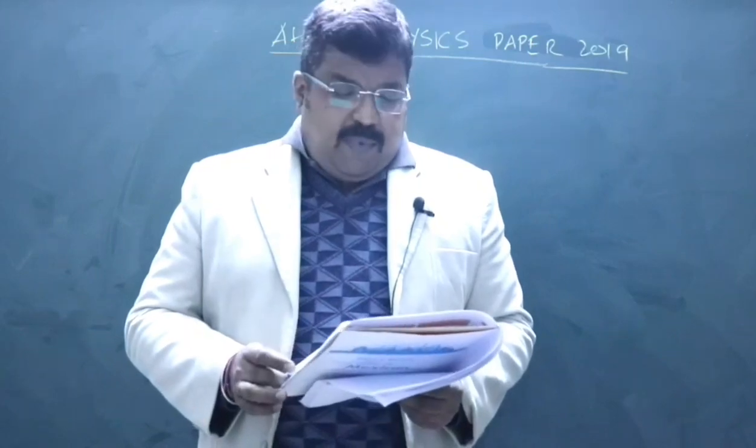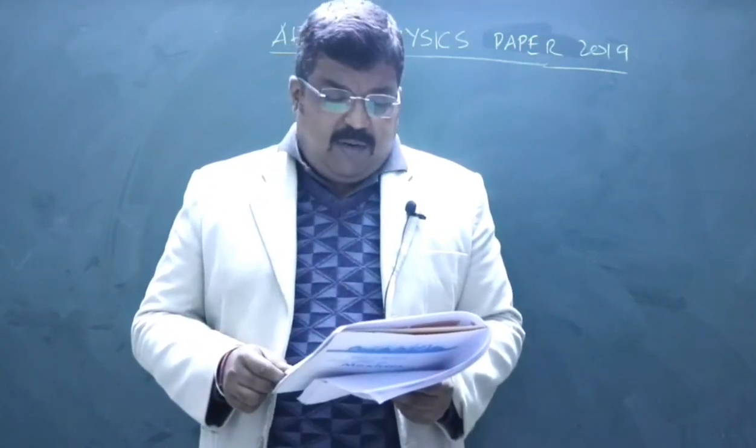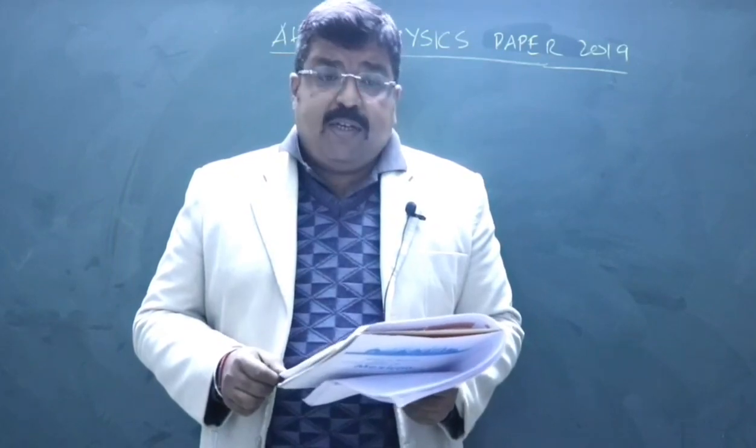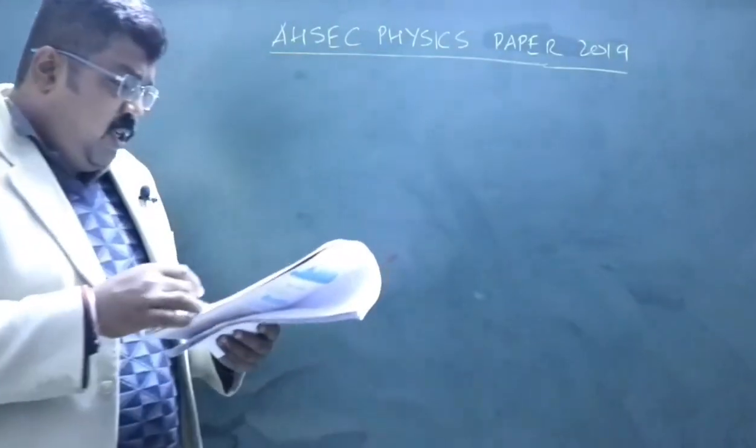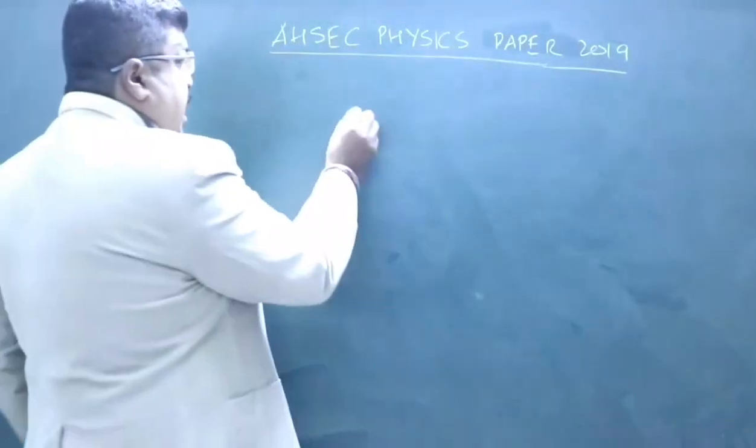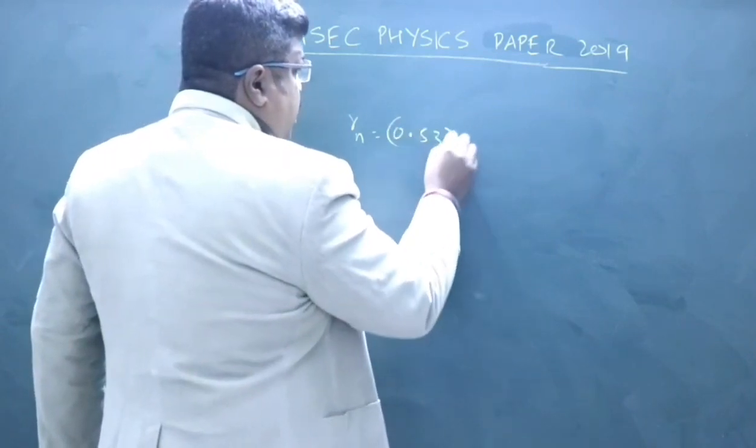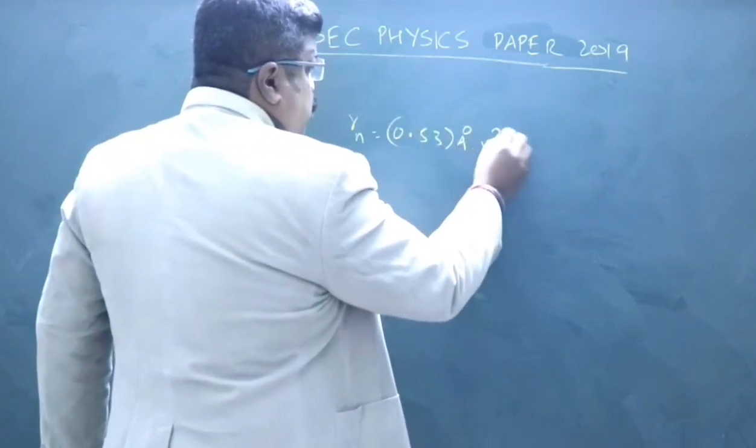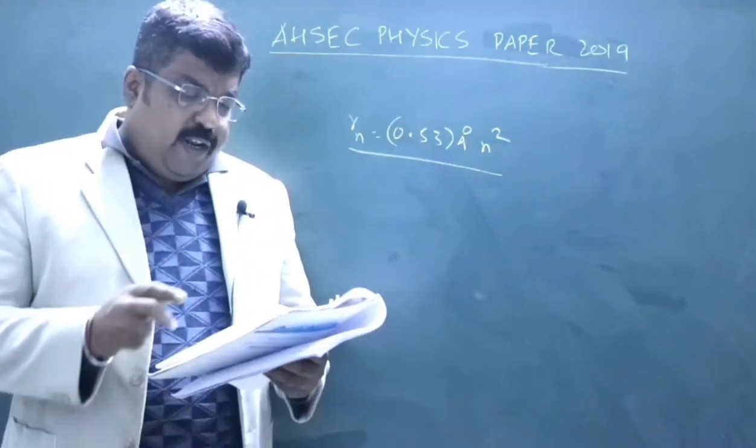1E: If the radius of the first orbit is given as 5.3 times 10 to the power minus 11 meter, what is the radius of the third orbit? For this you have to use the relation Rn equals 0.53 angstrom times n square. So instead of n, you need to write 3 for third orbit.